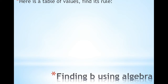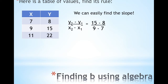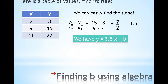I want to give you table values and find the rule for it. Something that you should be very comfortable with by now is finding the slope. Using this rule, if we do (15 − 8) over (9 − 7) we get that the slope is positive 3.5.